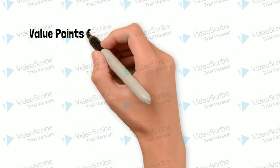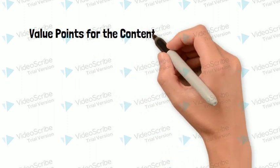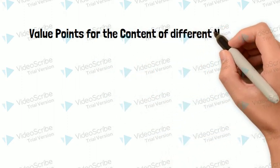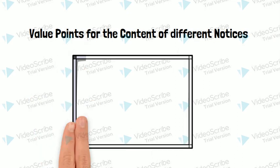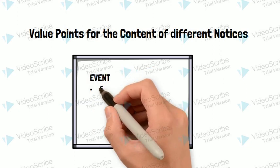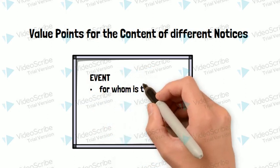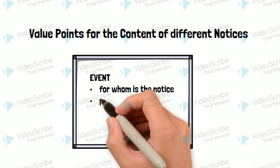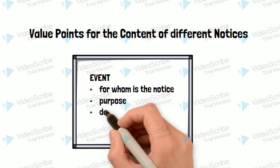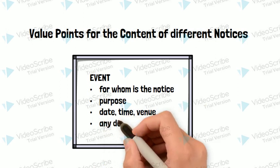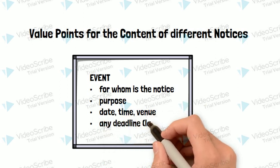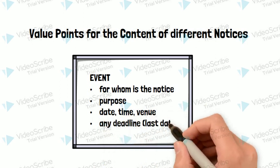Now we will discuss the value points for the content of different types of notices. The first kind is an event notice. Here we have to mention the target audience, the purpose of writing the notice, date, time, venue, and any deadlines — that is, the last date — which must be mentioned.